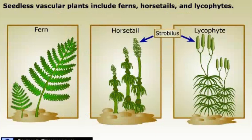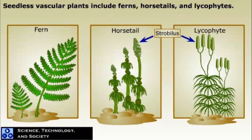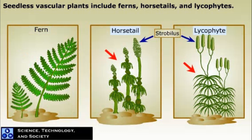Seedless vascular plants formed dense forests during the Carboniferous Period, about 300 million years ago. Their fossilized deposits were converted by the heat and pressure of the earth into extensive coal beds, which have been important sources of fuel since the Industrial Revolution. Today, the most familiar seedless vascular plants are the ferns.